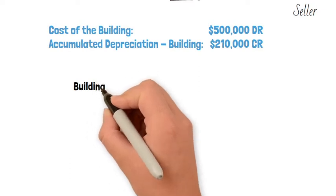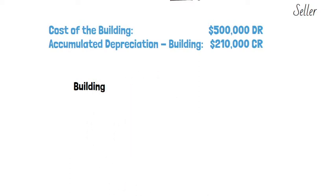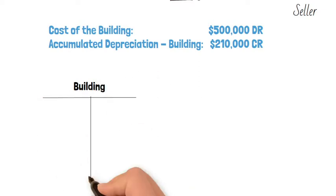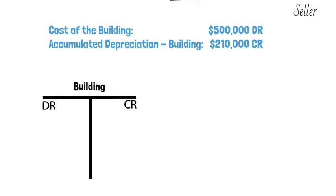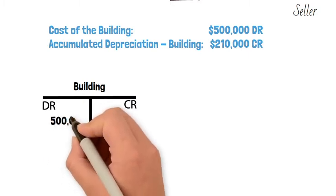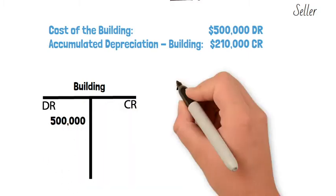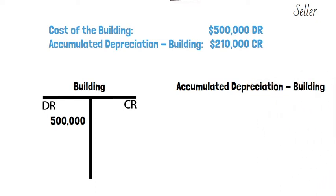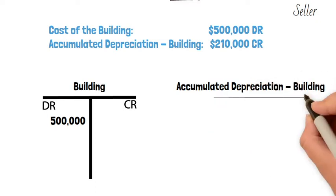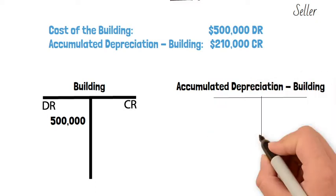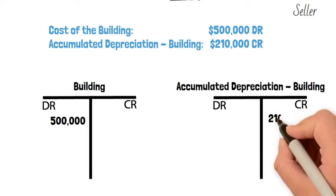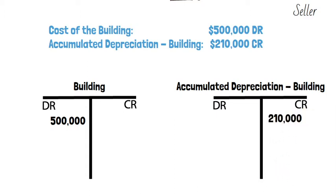Let's set up the T-account. The building has a debit balance of $500,000, so it should be on the left side. The cumulative depreciation T-account has a credit balance, so it should be on the right side of the T-account.